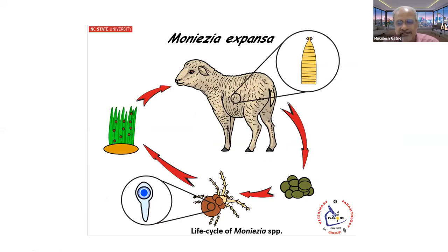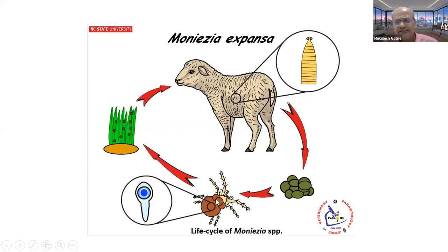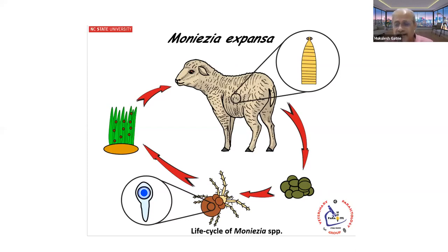These proglottids disintegrate and the eggs are released, and these eggs are consumed by oribatid mites. Oribatid mites are present in every type of soil — you can collect a soil sample from your backyard and find one or another species of oribatid mite in the sample.